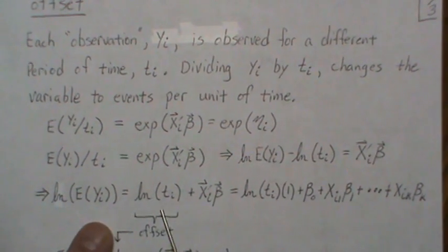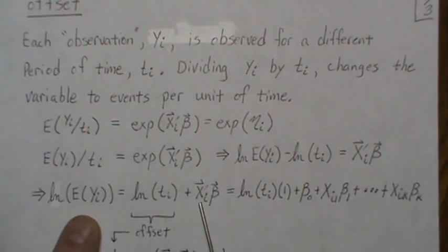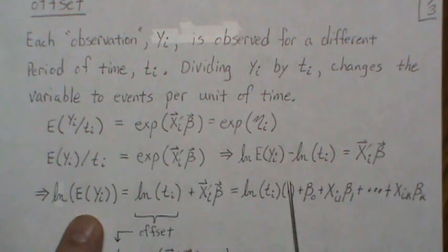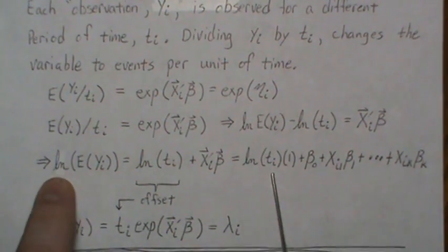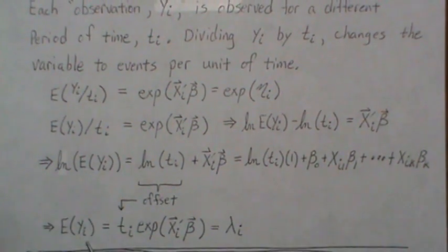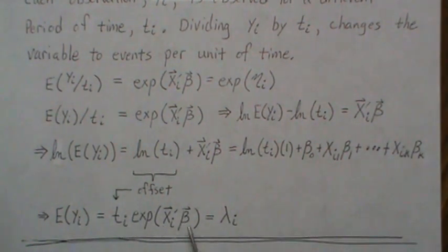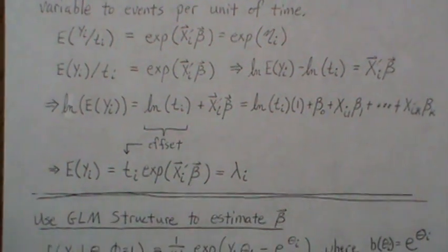We can take that log(t_i) term to the other side, and that piece is what's called an offset — it's the measure of time for each observation. In the built-in GLM function, you'd specify offset(log(t)) for this time variable. The linear combination beta_0 + x_1*beta_1 + ... + x_k*beta_k has an assumed coefficient of 1 in front of the offset term. Exponentiating both sides, we separate the terms and the mean lambda_i is now modeled with this offset included.